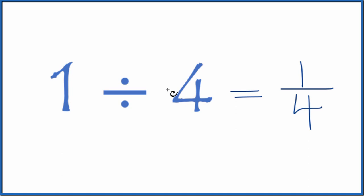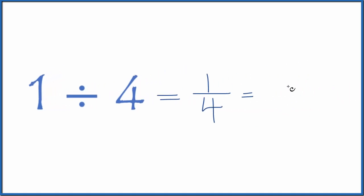You could also, on a calculator, divide 1 by 4. So 1 divided by 4, that equals 0.25. So 1 divided by 4 gives us a fraction 1 fourth and a decimal 0.25.